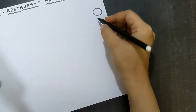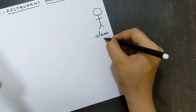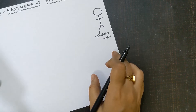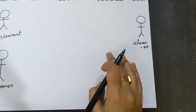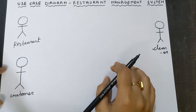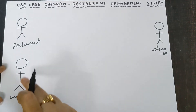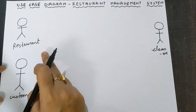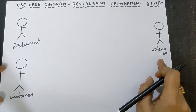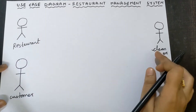Next, cleaner. A person should be there for cleaning the restaurant, so cleaner is an actor. Cleaner plays a vital role because you need to clean the restaurant — without proper hygiene, no customers will come. So these are the three actors: restaurant, customer, and cleaner.